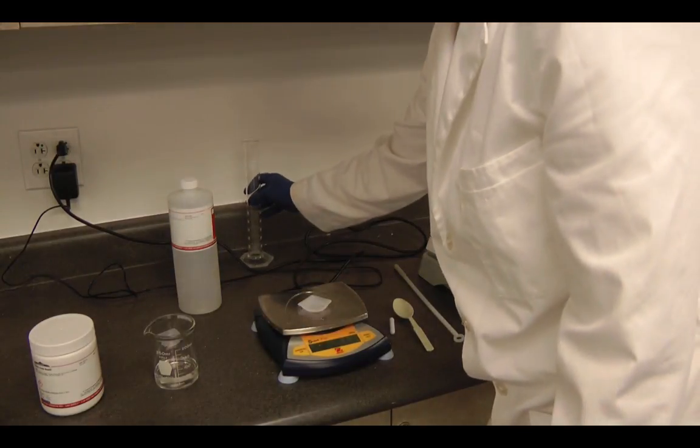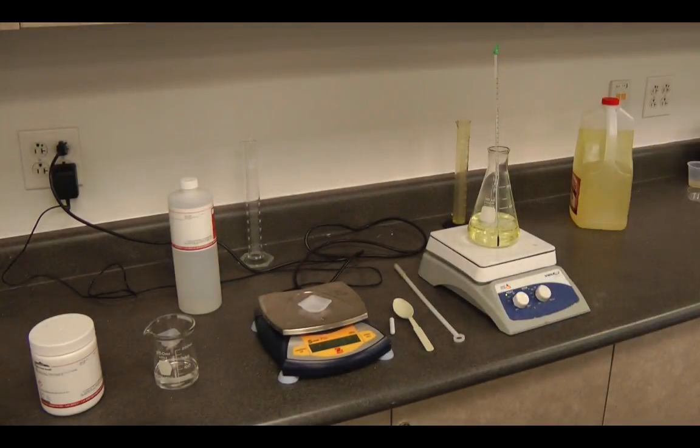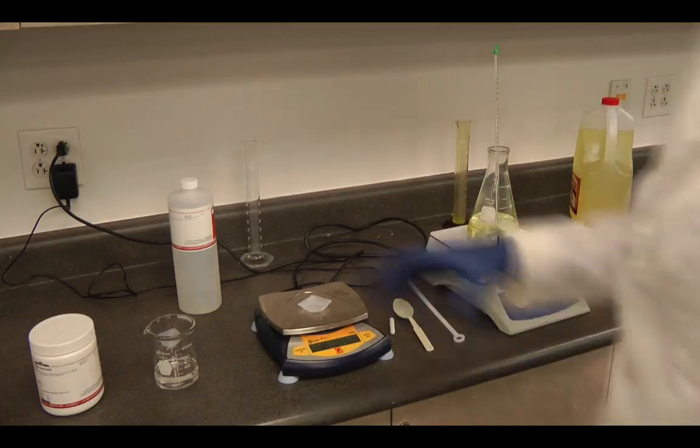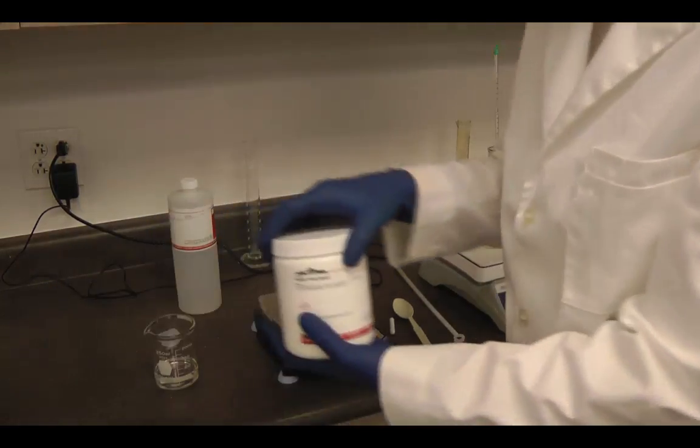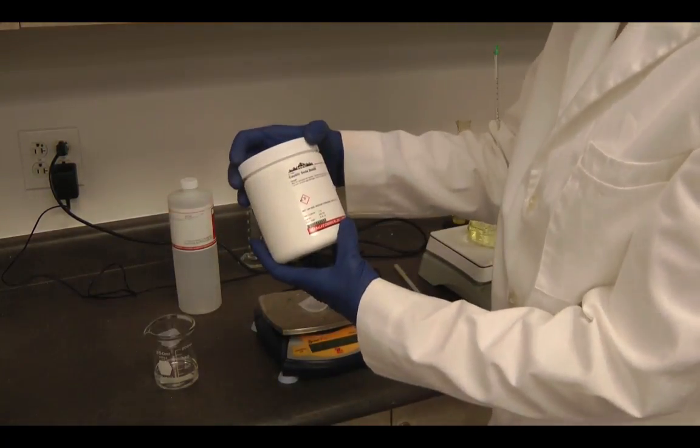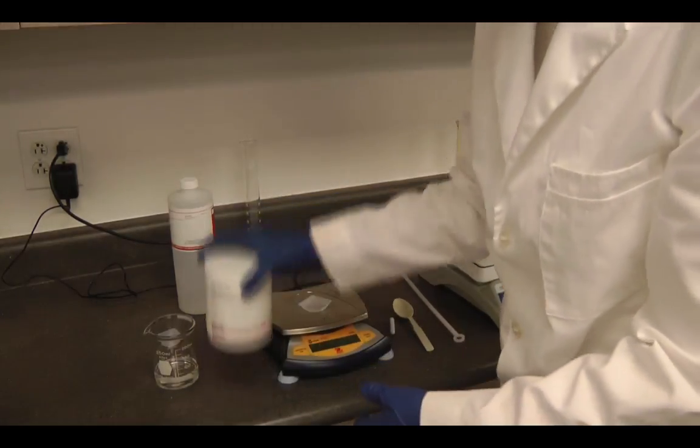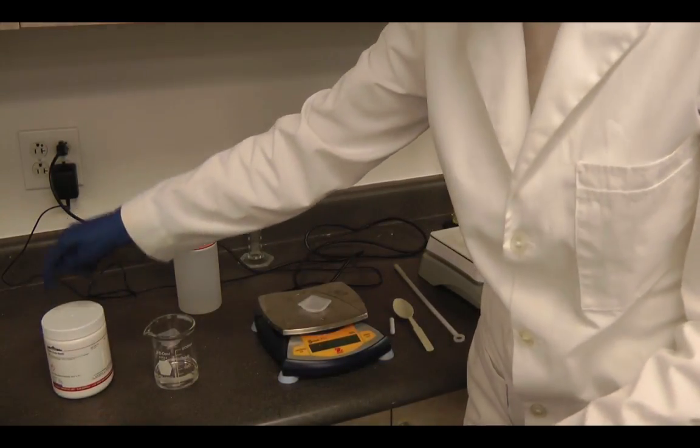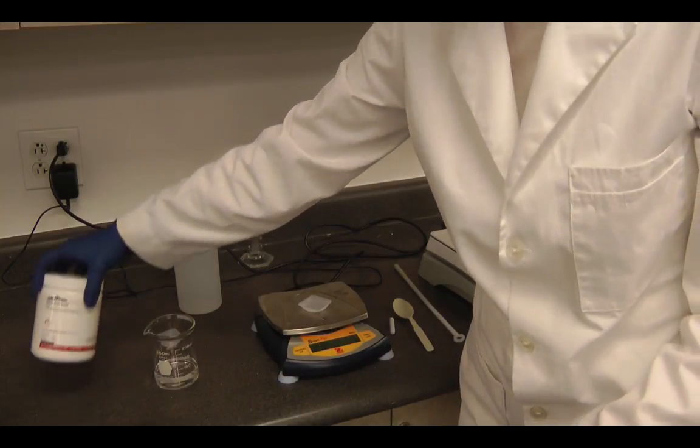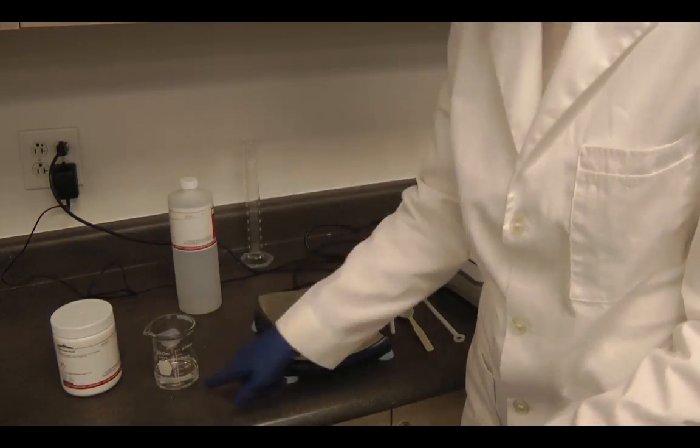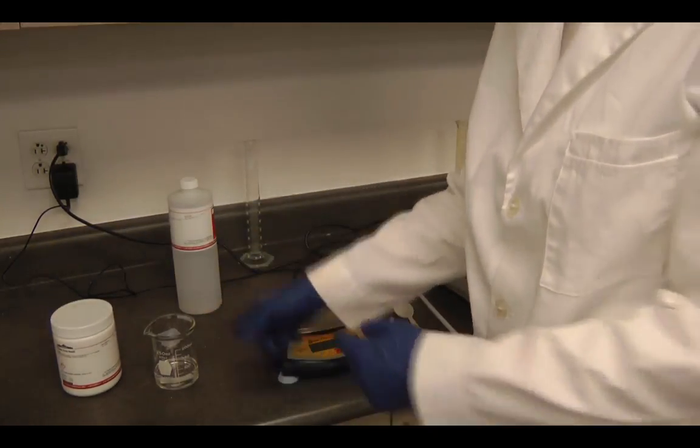And now I want to measure out 0.85 to 1.1 grams of sodium hydroxide. Now I always want to add a dry caustic, in this case, to my solution and not the other way around.